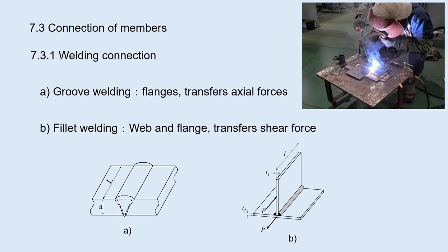Section 7.3.1: Welding connection. There are two kinds of welding: groove welding and fillet welding. For groove welding, the end faces of the two plates are cut in a V or X shape, and melted metals are poured into the gap of these plate ends. Flanges are welded by groove welding, which transfers the axial forces. For fillet welding, melted metal is poured to the corner of the two plates. The web and flange are welded by fillet welding, which transfers the shear force.